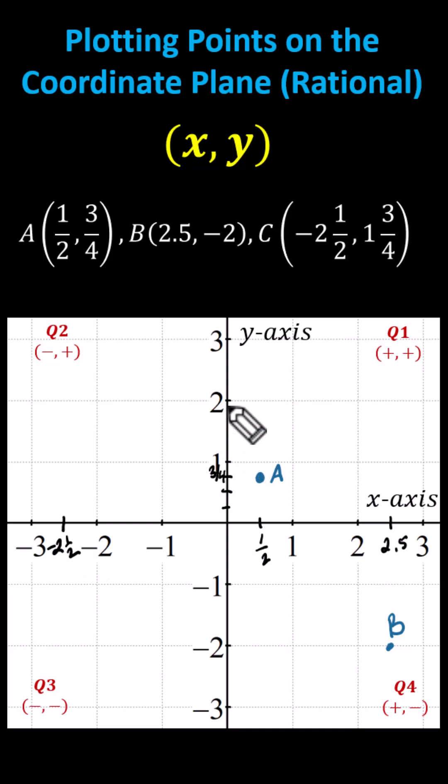Let's divide the interval from one to two into four equally sized parts, so we can count by fourths. We have one-and-one-fourth, one-and-two-fourths, and one-and-three-fourths.